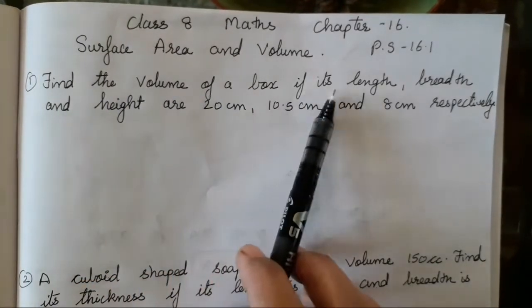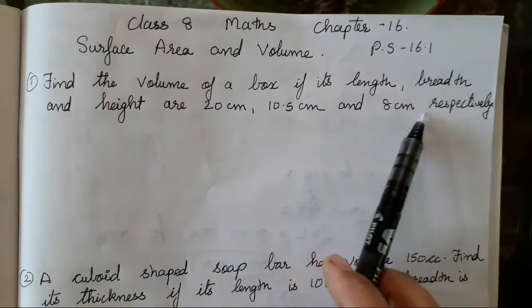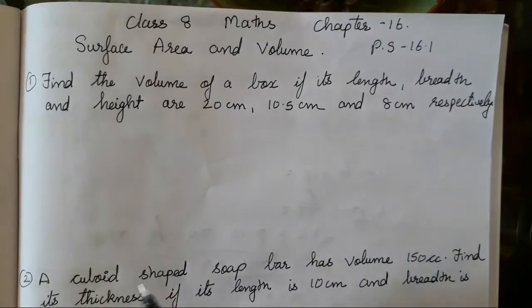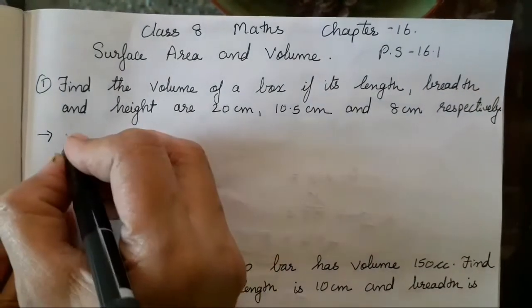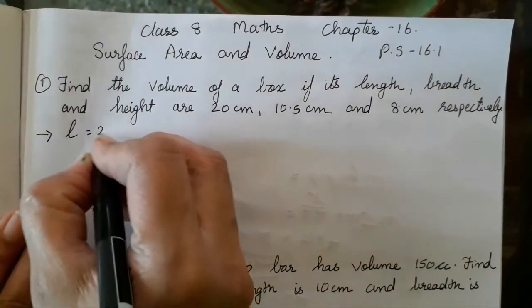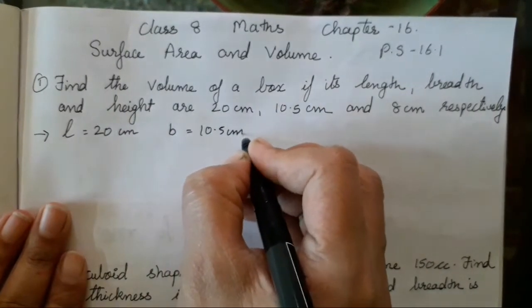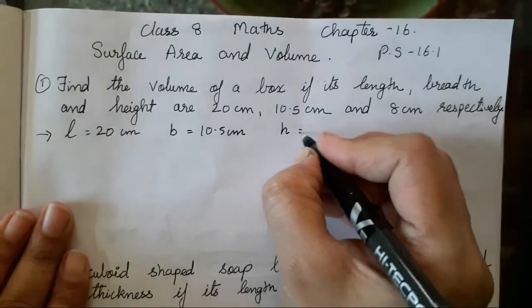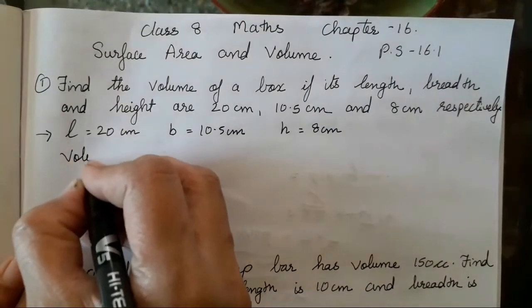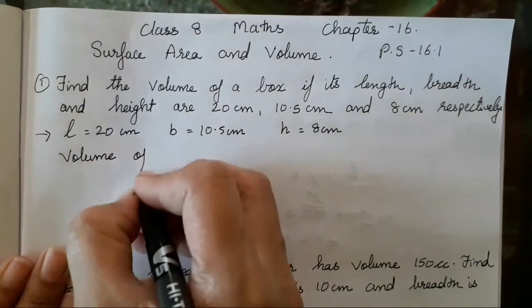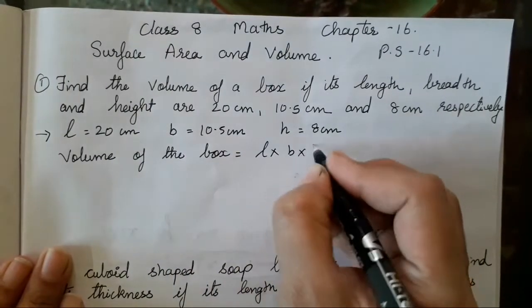Find the volume of a box if its length, breadth and height are 20, 10.5 and 8 cm respectively. So first we will write what has been given. Length L is 20 cm, breadth B is 10.5 cm, and height H is 8 cm. The formula we have to use is volume of the box equals length into breadth into height.